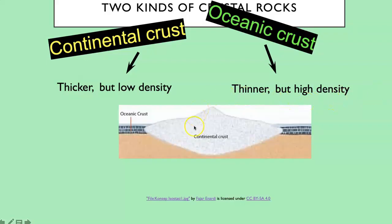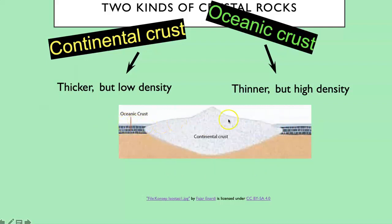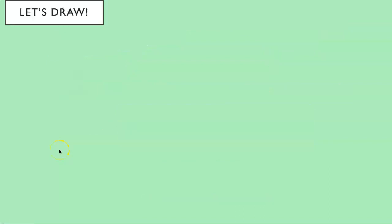In cross section, the continental crust, being thicker, floats a little higher on the underlying material, while the ocean crust is thinner and floats lower — so ocean water tends to sit on top of the ocean crust.